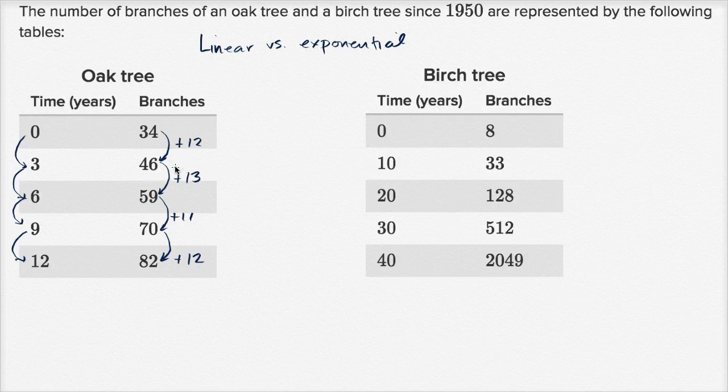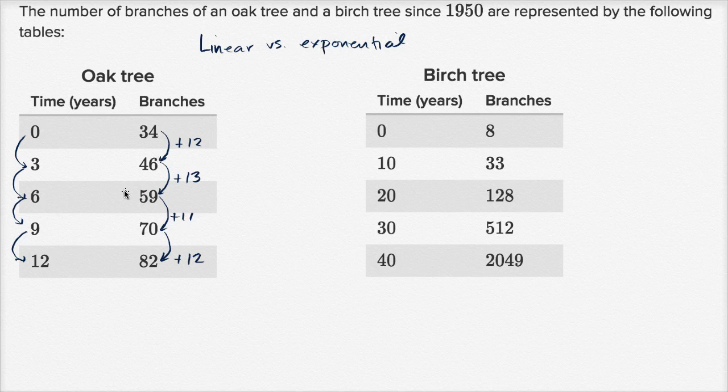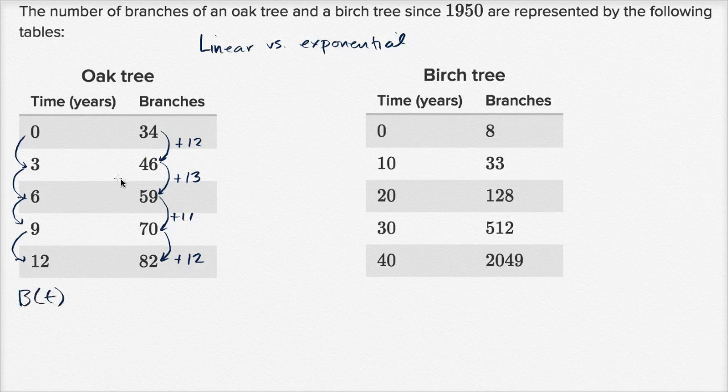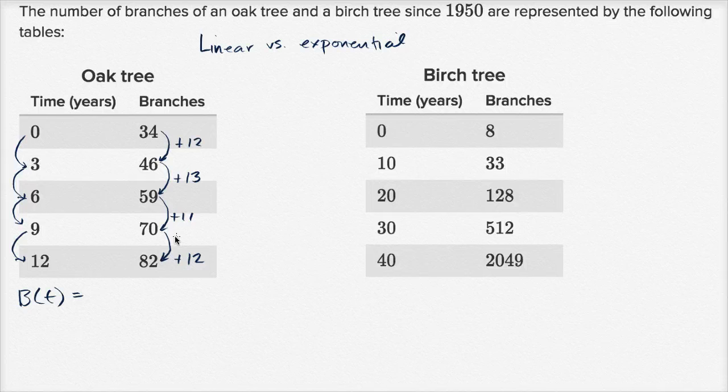But when you're looking at real world data, you're never going to get something that is exact. The models are just going to give us a good fit, a good approximation of the behavior of the number of branches over time. For me, this is pretty close to a constant 12 branches a year. So I would construct a linear model here. Now let me be clear, this isn't 12 branches per year. This is 12 branches every three years. We're going to average 12 branches over three years.